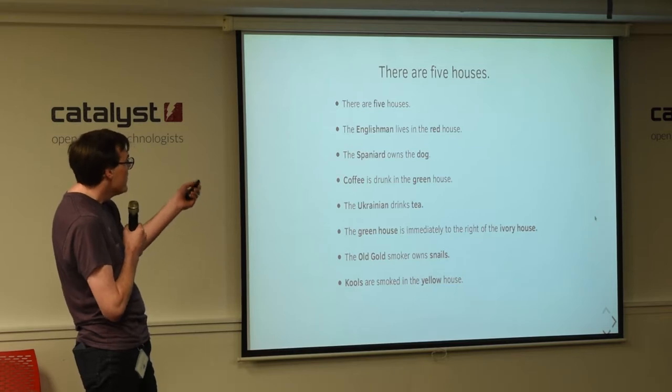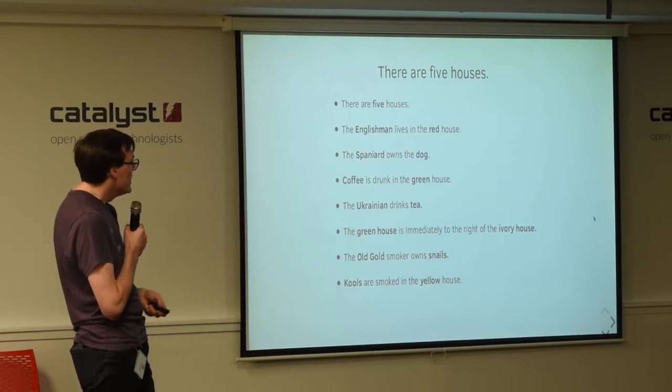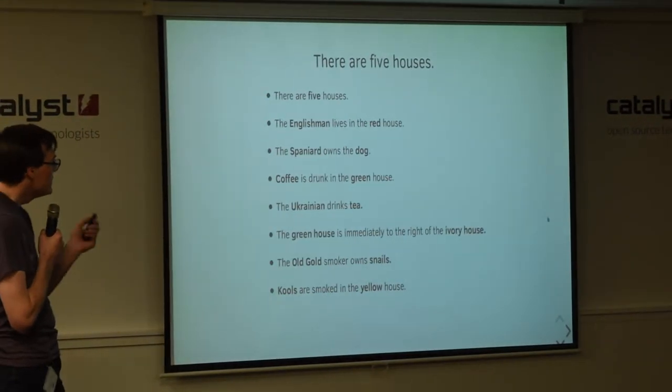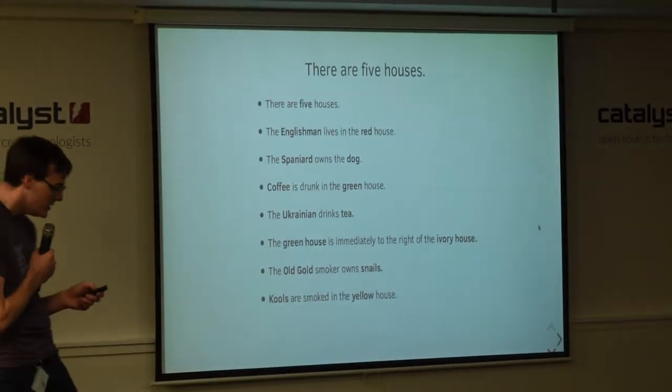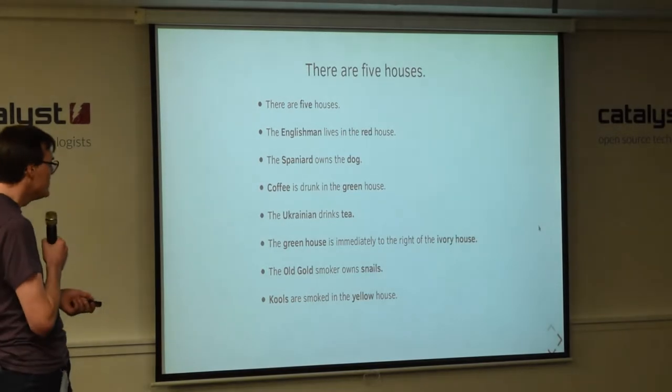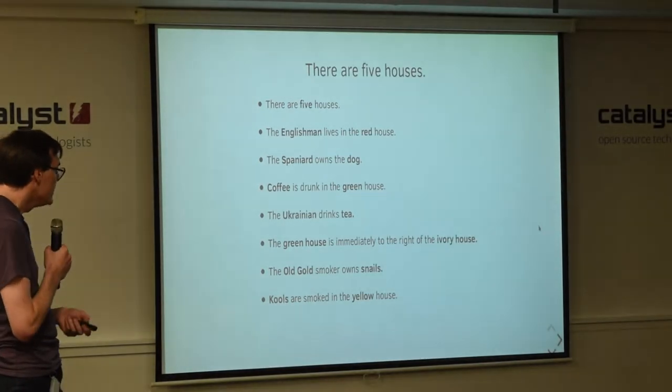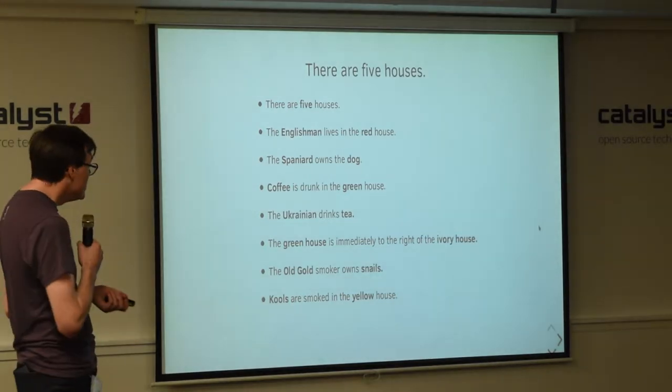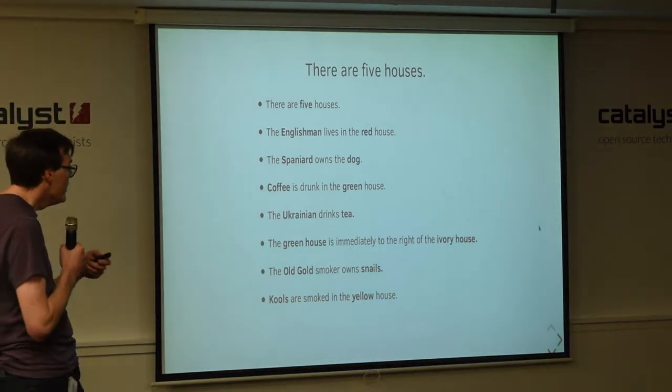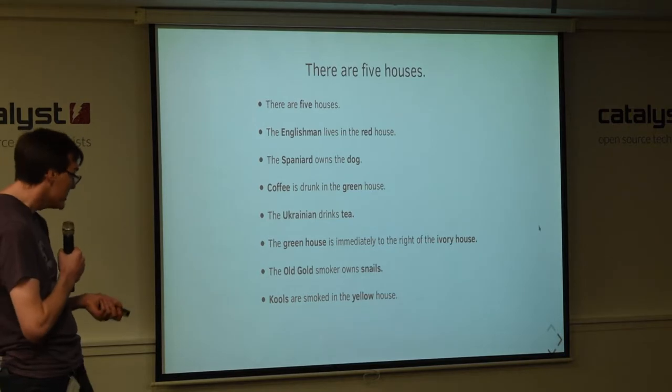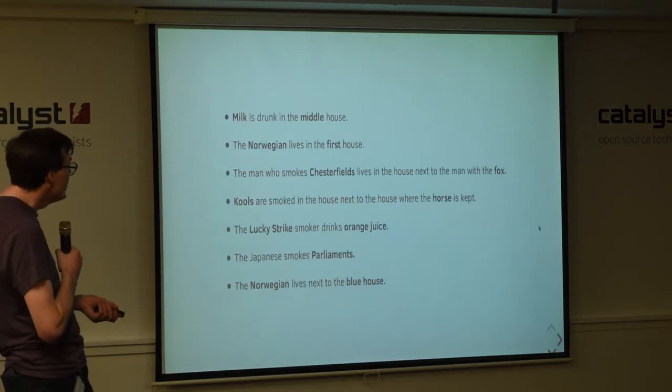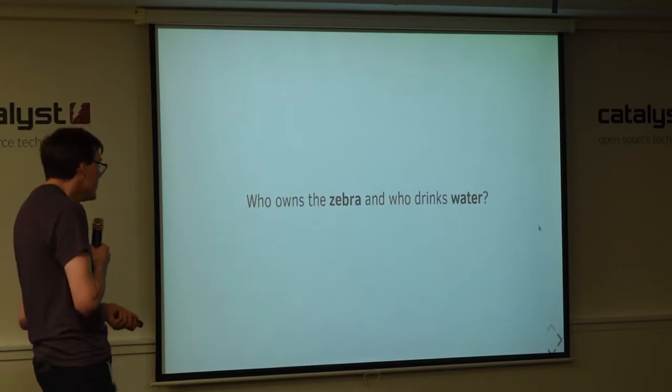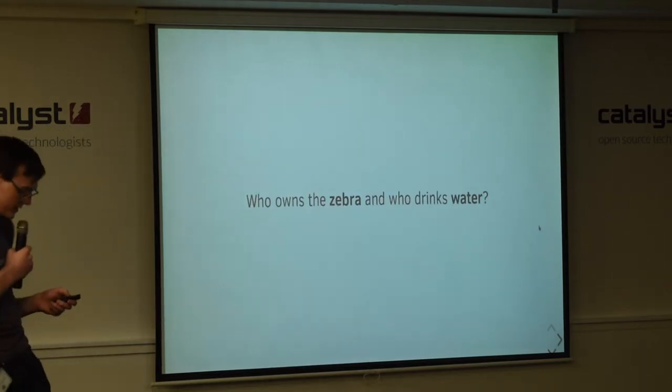There's a bunch of attributes about each house. The Englishman lives in the red house. The Spaniard owns the dog. Coffee is drunk in the greenhouse. And there's all these constraints and properties between houses, pets, preferred beverages, what kind of cigarette the owner smokes. So there's 15 constraints in total. And the question is posed, who owns the zebra and who drinks the water?